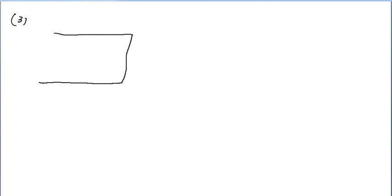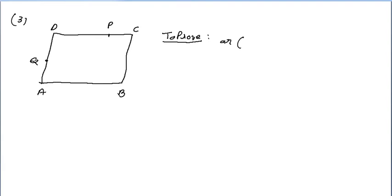The next question: ABCD is a parallelogram. P is a point on DC and Q is a point on AD. We want to prove that area of triangle APB equals area of triangle BQC.